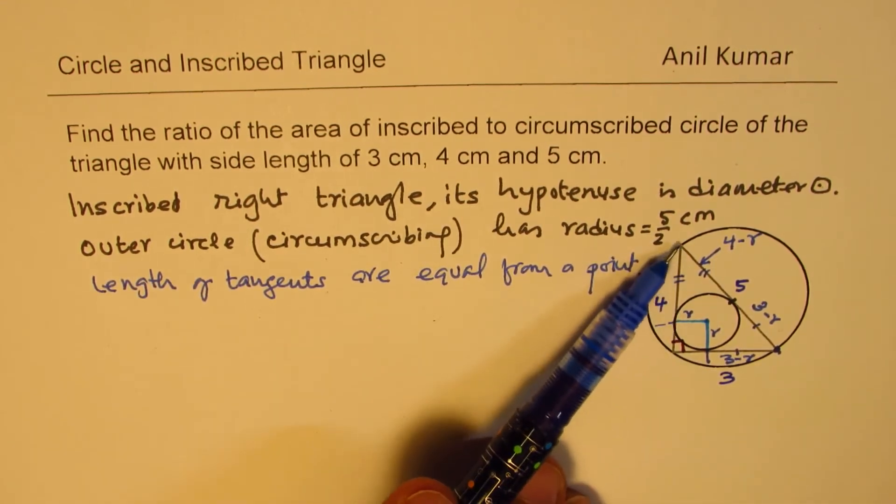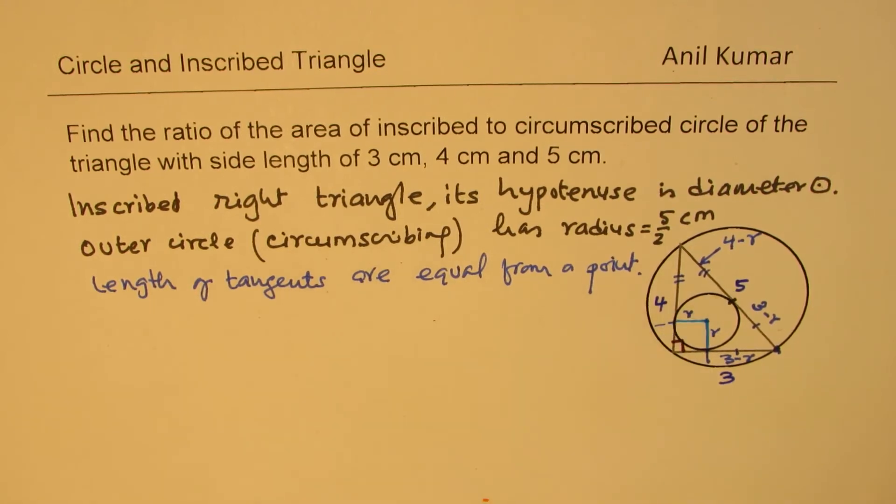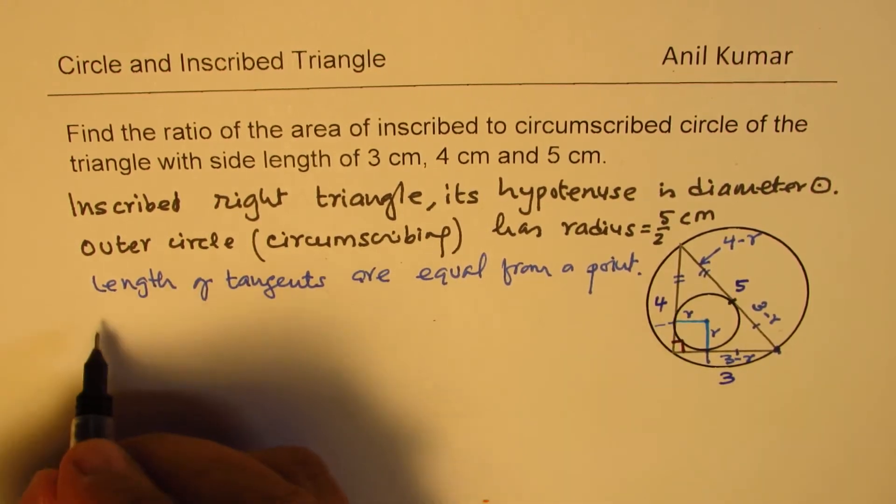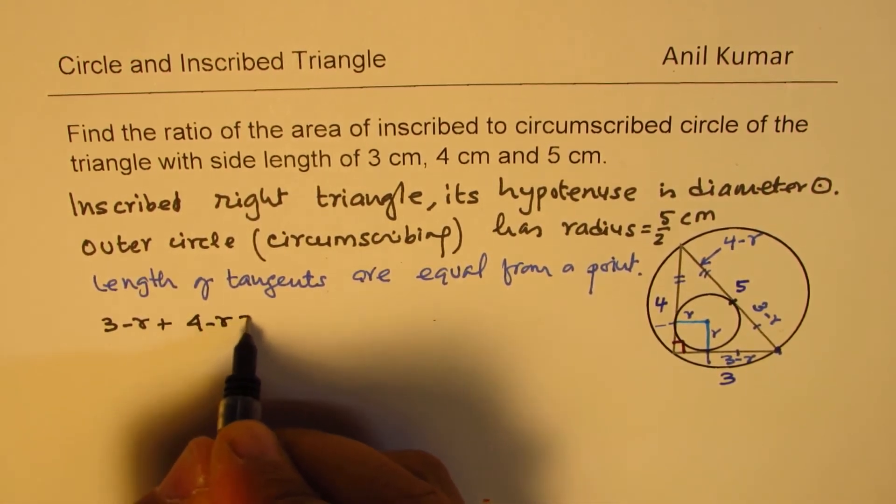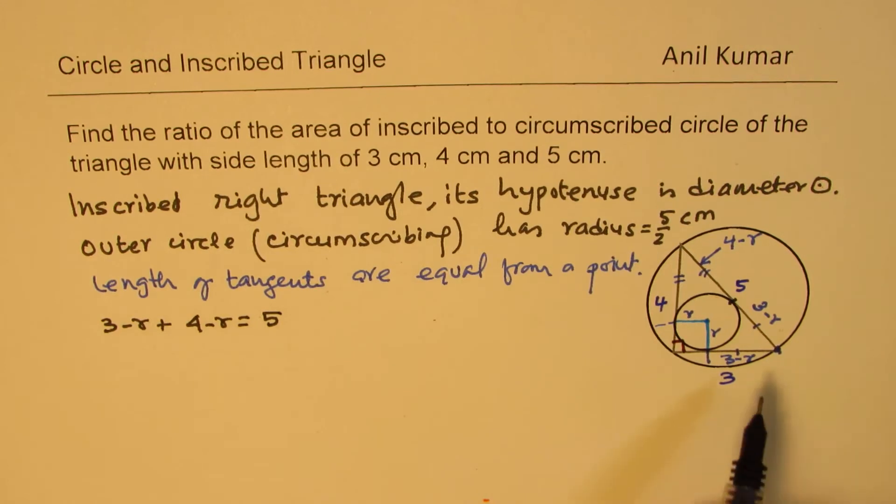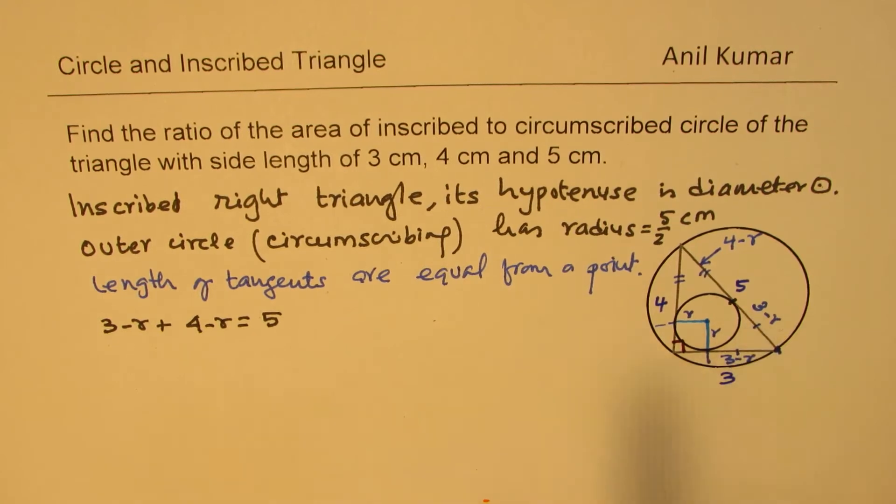Now you can see that the hypotenuse actually is 5 units. Since it is 5 units, we can say that 3 minus r plus 4 minus r is equal to 5. So whenever you have this kind of a situation, you can see that the perimeter is kind of related.